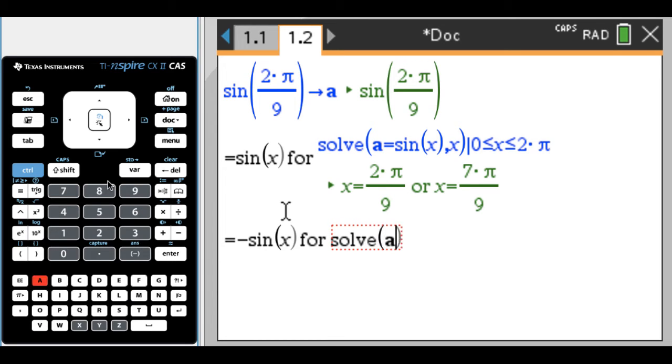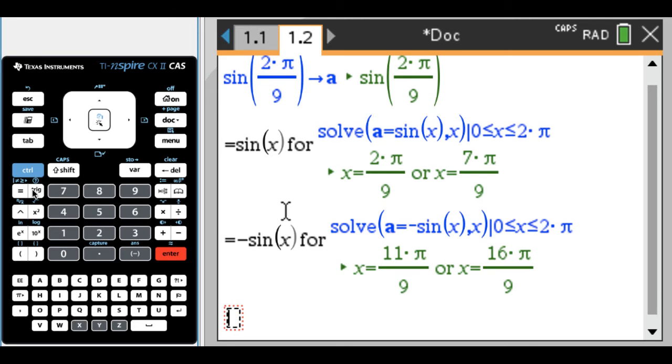And basically the same thing. So solve, and then a equals the negative of the sine of x, comma x, such that zero less than or equal to x less than or equal to 2 pi. It's faster for you to use control equals and pick it from the menu there. And I'm going to press enter, and it's going to evaluate it again. And again, I'm going to change that in a second.